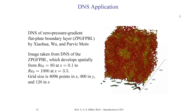Let's look at something more contemporary. From Professor Moin's group at Stanford and his postdocs and students, a DNS of a zero-pressure-gradient flat turbulent boundary layer is shown using Q criterion. They fully resolved the turbulence and you can see the many modes and structures. It is a fully developed flow. The Reynolds number based on momentum thickness ranges from 80 at x=0.1 to 1000 at x=3.5. The grid size is 4096 points in x, 400 in y, and 128 in z.